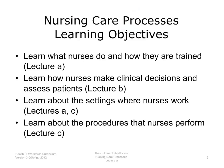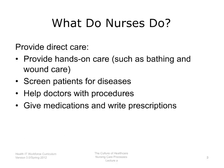The objectives for nursing care processes are to learn what nurses do and how they are trained, learn how nurses make clinical decisions and assess patients, learn about the settings where nurses work, and learn about the procedures nurses perform. This lecture discusses nursing roles, responsibilities, and work settings. It also describes what nurses do, how they are trained, and where they work.